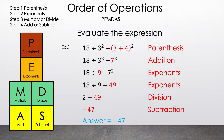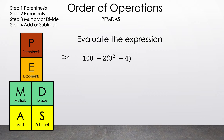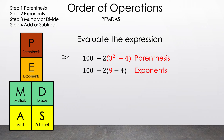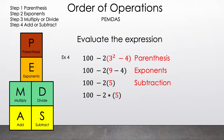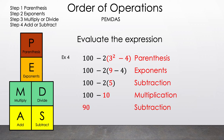Now let's move on to example four. Evaluate the expression 100 minus 2 times the parentheses of 3 squared minus 4. We see parentheses, so let's highlight that. We have to decide between the square and subtraction. Since square is a type of exponent, we do that first. 3 squared is 9. Now we have 100 minus 2 times the parentheses of 9 minus 4. We still have parentheses, so let's do the operation inside. 9 minus 4 is 5. Now we have 100 minus 2 times 5. Since multiplication comes before subtraction, we multiply 2 times 5, which gives 10. Now we have 100 minus 10, and the result is 90. That is the answer for example four.